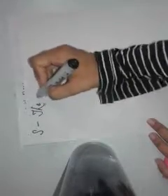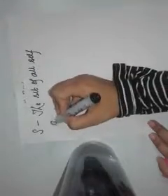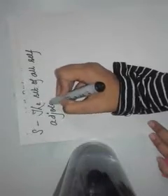To prove this statement it is quite simple. First, we have to prove that the set of all self-adjoint operators is a real subspace, and then we will prove that this set is closed. Let us symbolize the set as S.